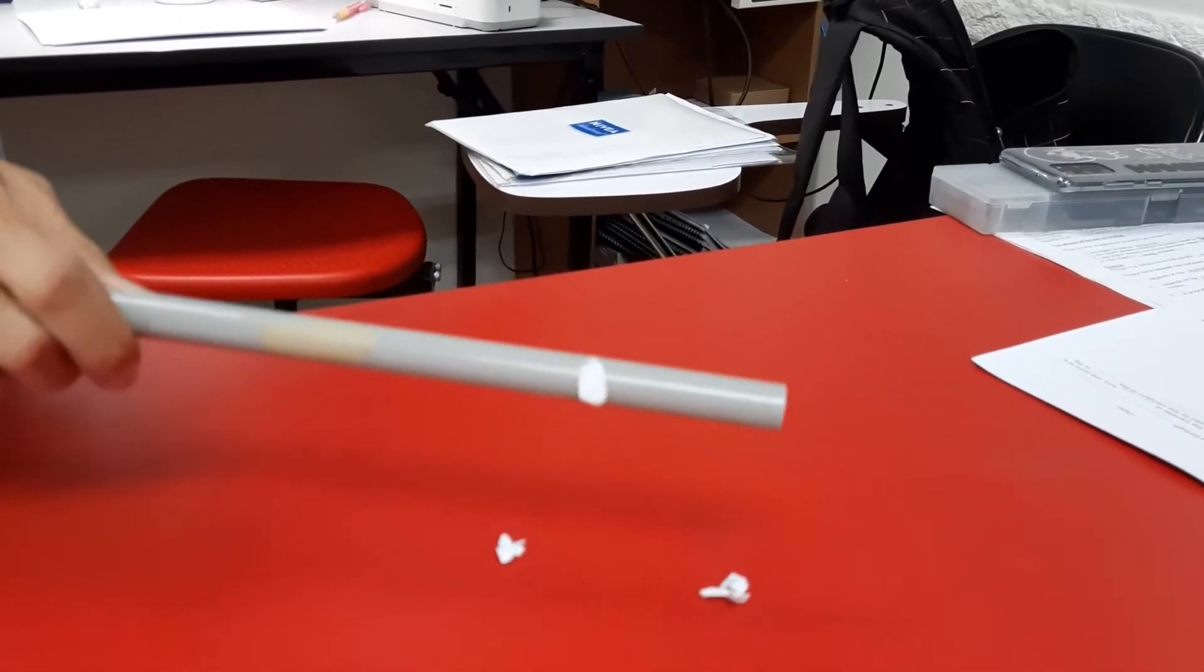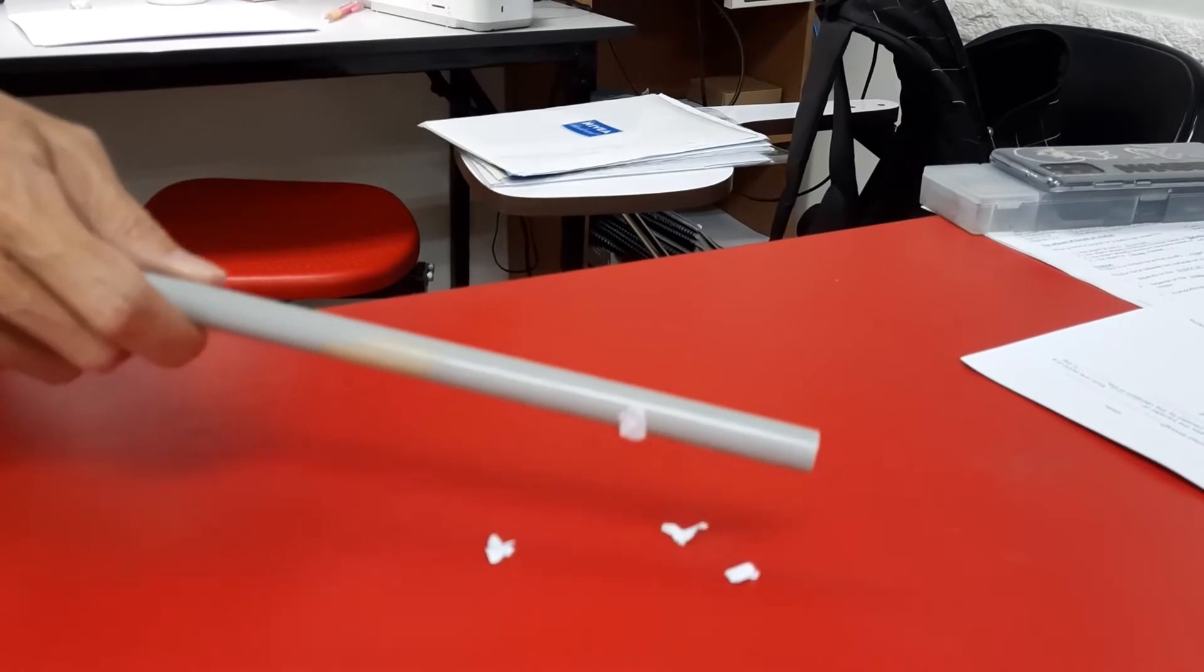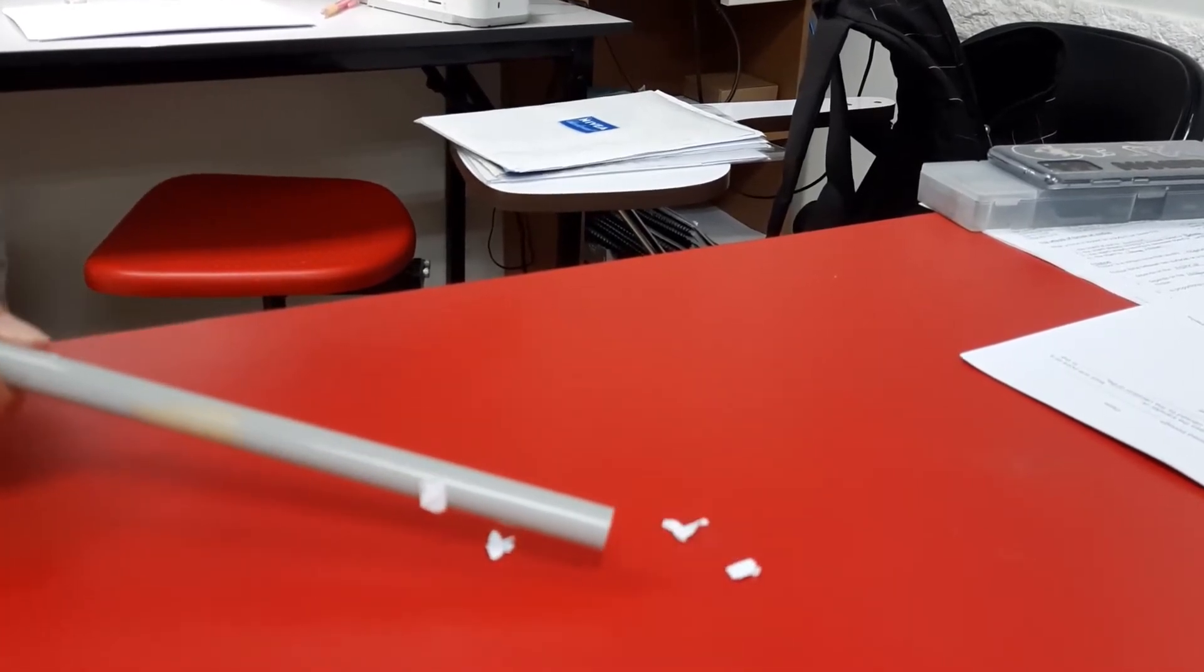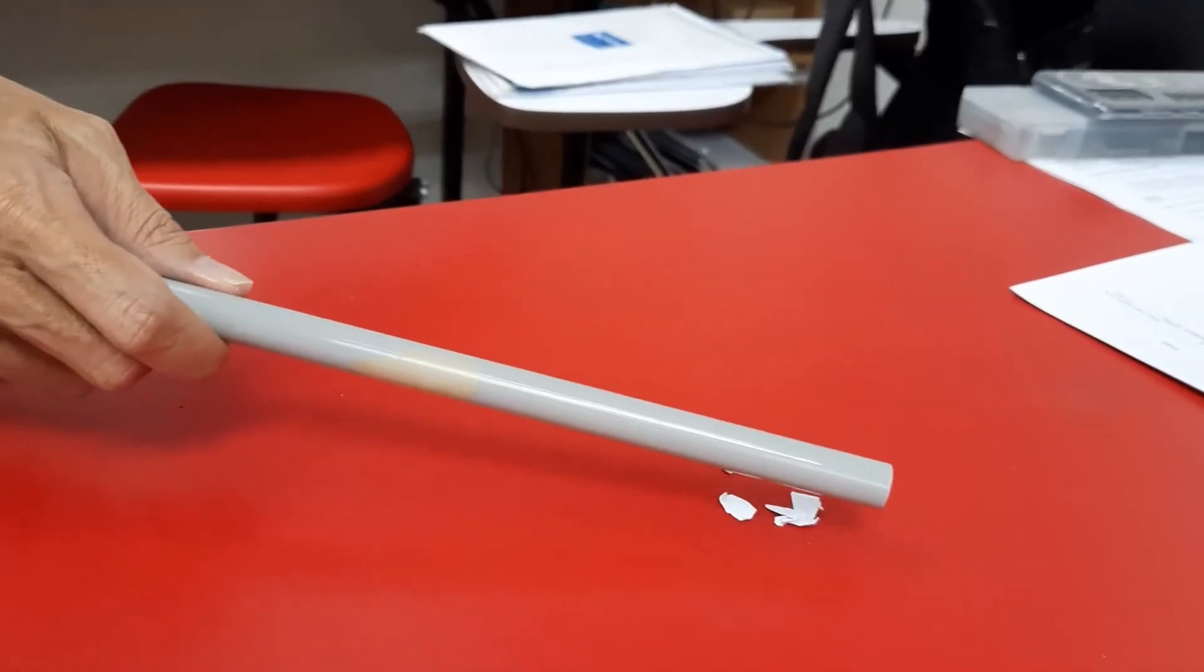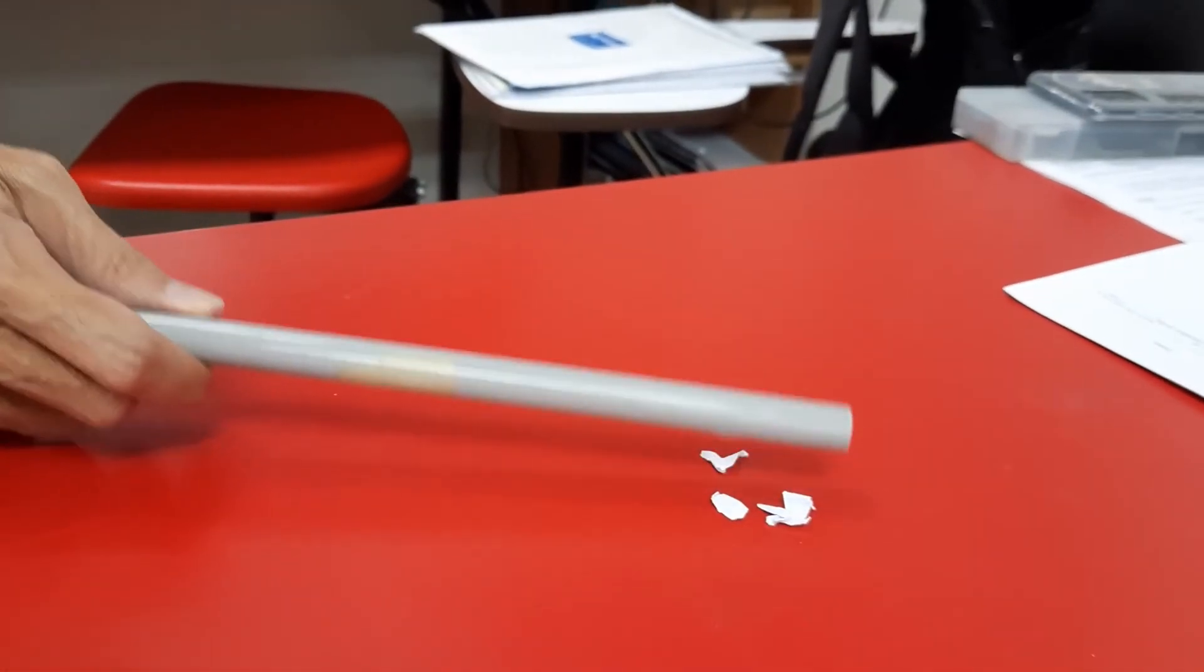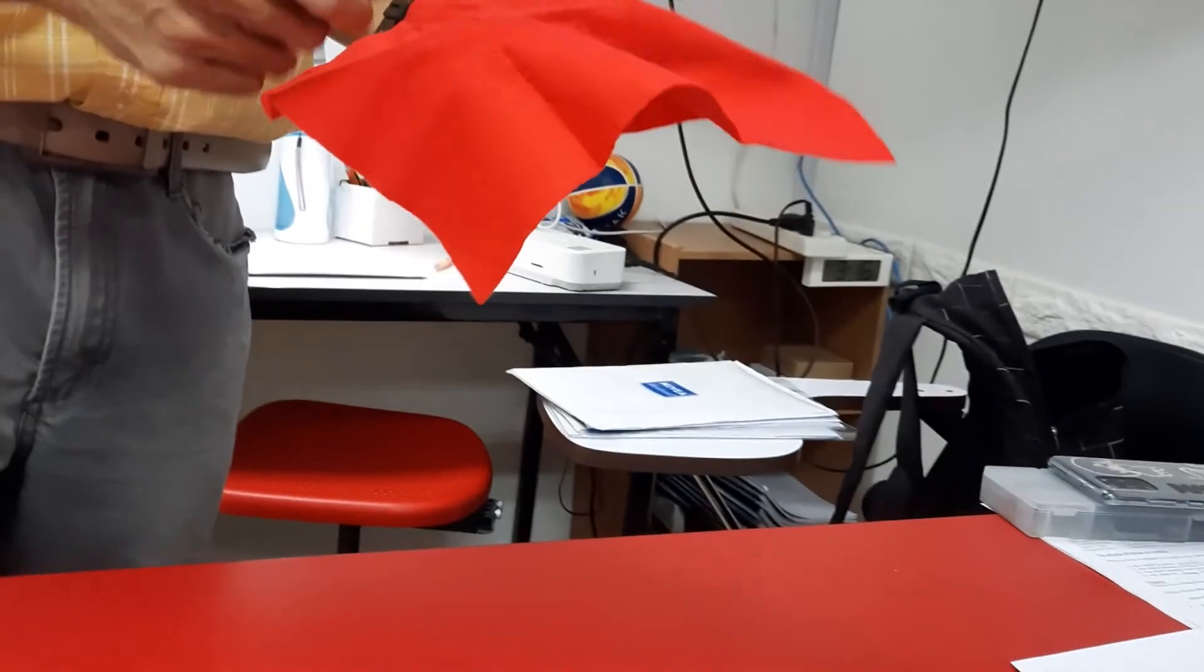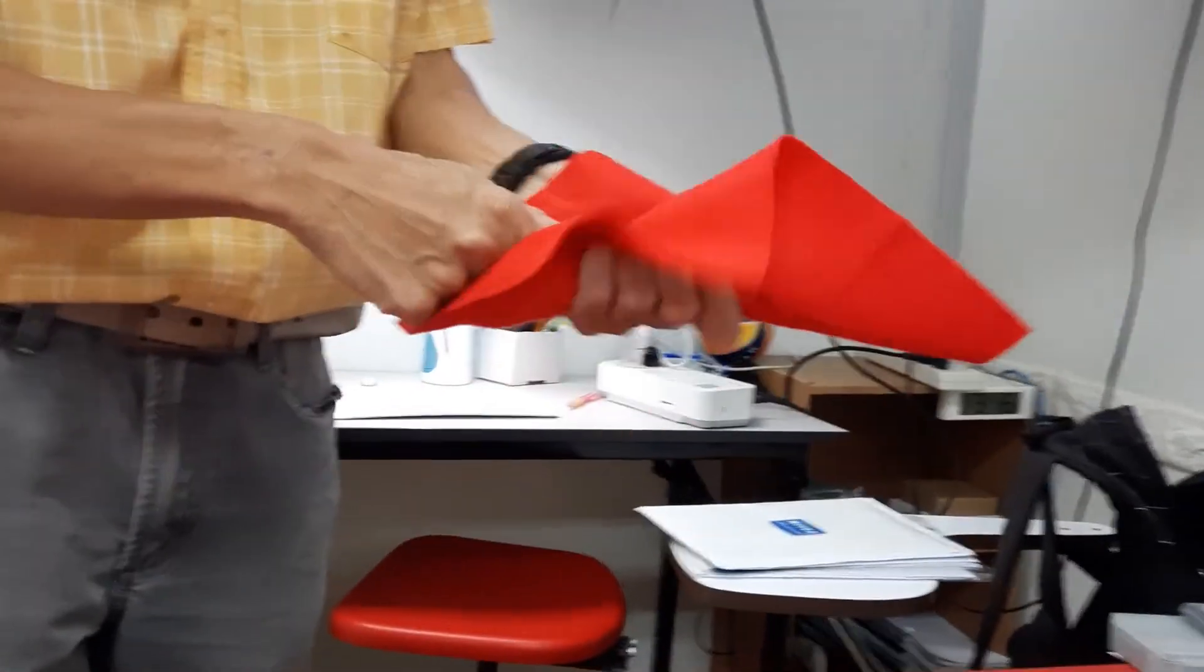So it behaves as if this rod has become a magnet and the pieces of paper are iron filings made of iron and being attracted by it. Quite an interesting demonstration.